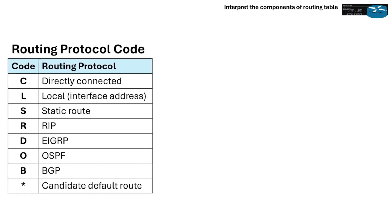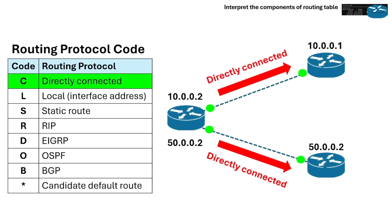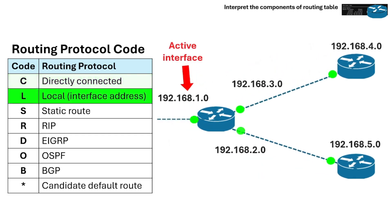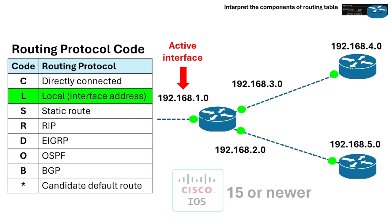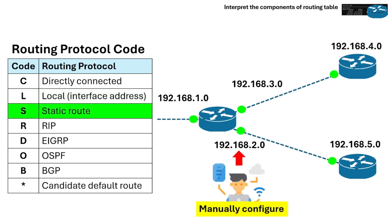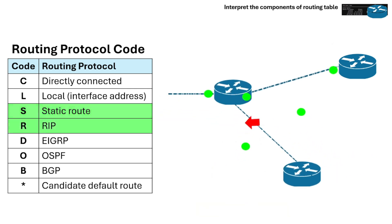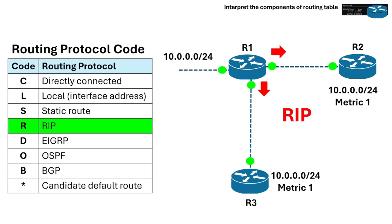Here are the common routing protocol codes and what they mean. C means connected, where the network is directly connected to one of the router's interfaces. L means local, which is added when an interface is configured and active — this entry is only displayed in IOS 15 or newer for IPv4 routes and all IOS releases for IPv6 routes. S is for static, which is a route manually configured by an administrator. R is for RIP, which is learned via Routing Information Protocol, or the Distance Vector Protocol.